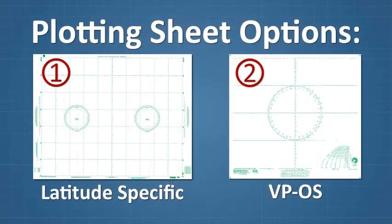Universal plotting sheets, sometimes referred to as VPOS, offer more flexibility. Horizontal lines can be labeled for any range of latitudes up to 70 degrees north or south. Meridians can be drawn out and used for any desired range of longitudes.